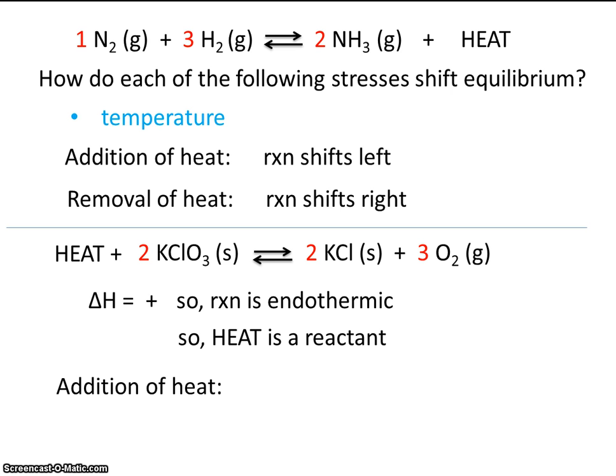So how will the addition of heat shift this reaction? Well, if we add more heat, that should shift the reaction to the right. Conversely, if we remove heat, that's taking away this heat right here. The way that the reaction relieves that is by making more heat. And the way the reaction makes more heat is by shifting to the left.